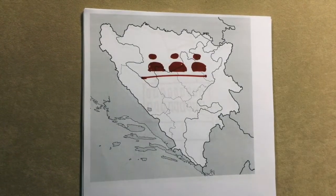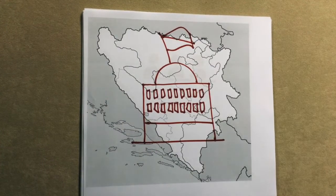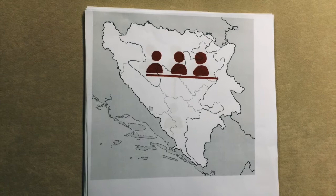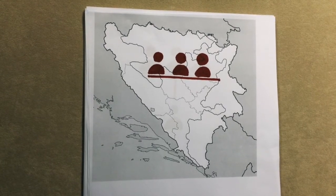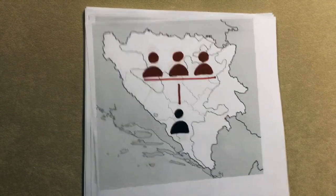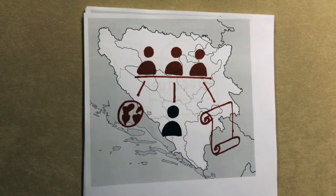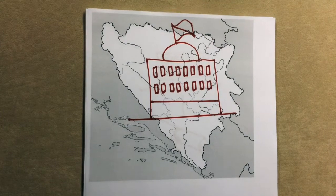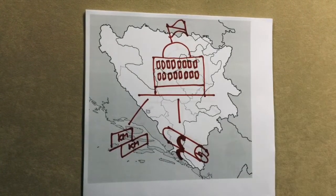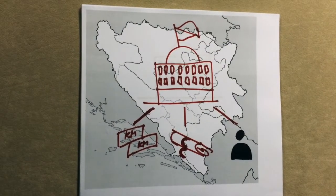In general elections, all citizens elect the State Presidency and the National Parliament's House of Representatives. The State Presidency is in charge of international relations and defence. It proposes the Prime Minister, directs international policy, and appoints ambassadors. The National Parliament's House of Representatives creates national laws, controls the State budget, and confirms the Prime Minister and Cabinet.